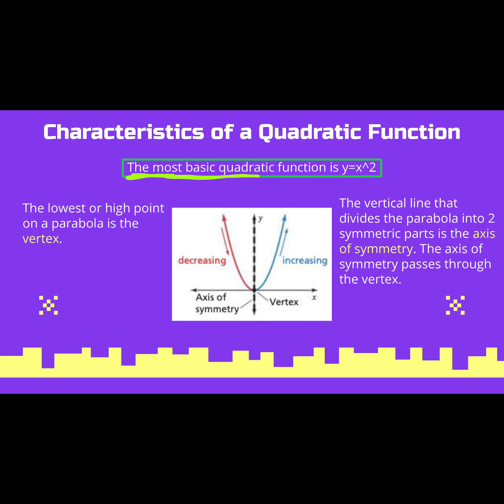A parent function would be the most basic or the most simple form of any type of function. The parent function we looked at earlier was with a line — that was y equals x. We said that was a parent function. We also looked at a parent function for absolute value.